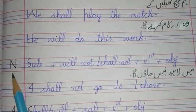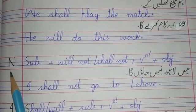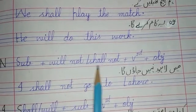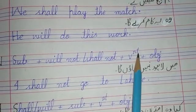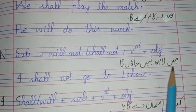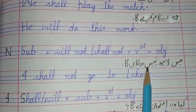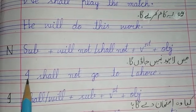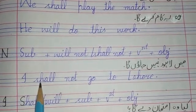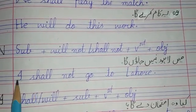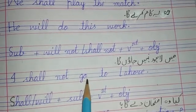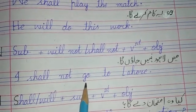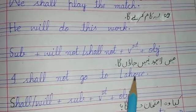Next, for making negative sentences, the structure of future indefinite tense is: subject, then 'will not' or 'shall not,' plus first form of verb, and then object. For example, 'I shall not go to Lahore.' 'I' is our subject, 'shall not' is the helping verb, 'go' is the first form of verb, and 'Lahore' is the object.